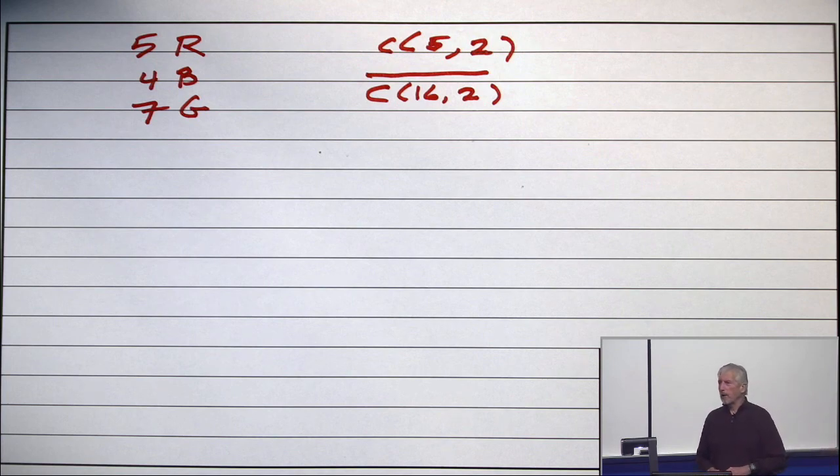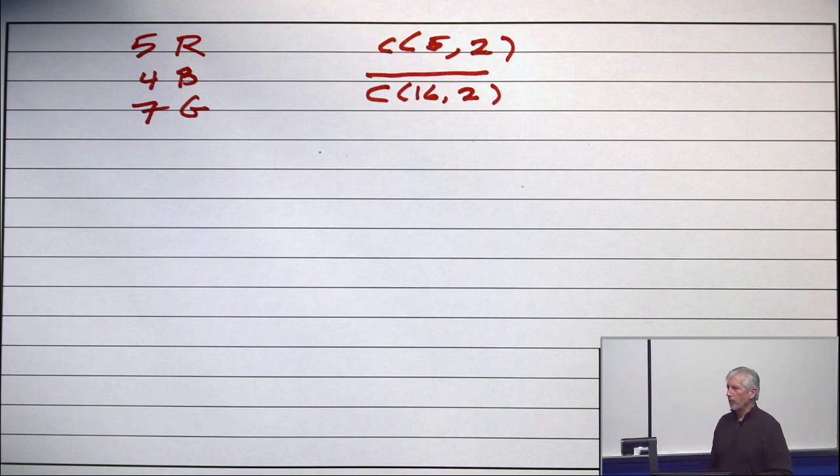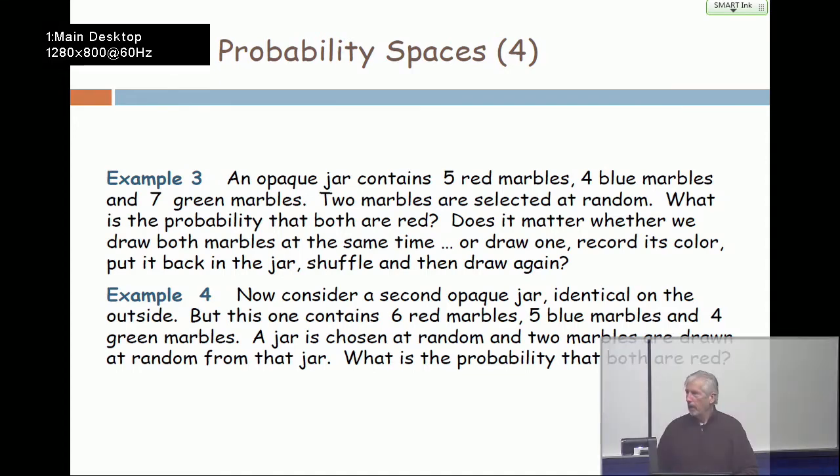So if you really want to get two reds, can we do it sequentially? That improves your prospect slightly. Okay? Second example.